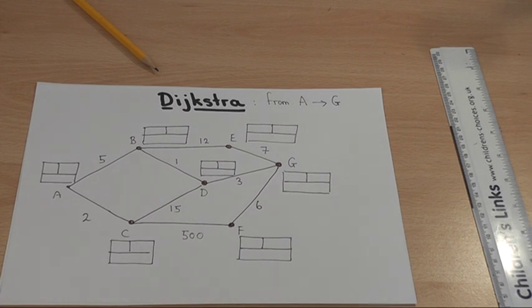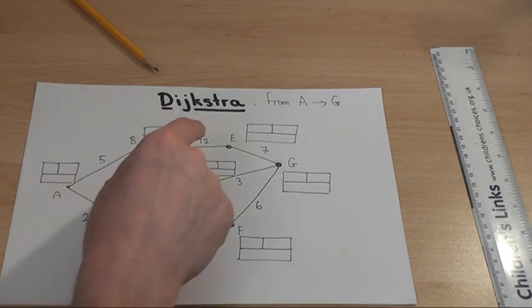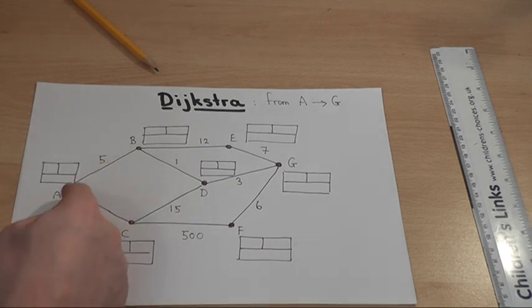But this is not always obvious when the network becomes larger. Now, Dijkstra is a way of inductively finding shortest routes from A, in this case, to lots of other nodes. And eventually we happen to find the shortest route from A to G.